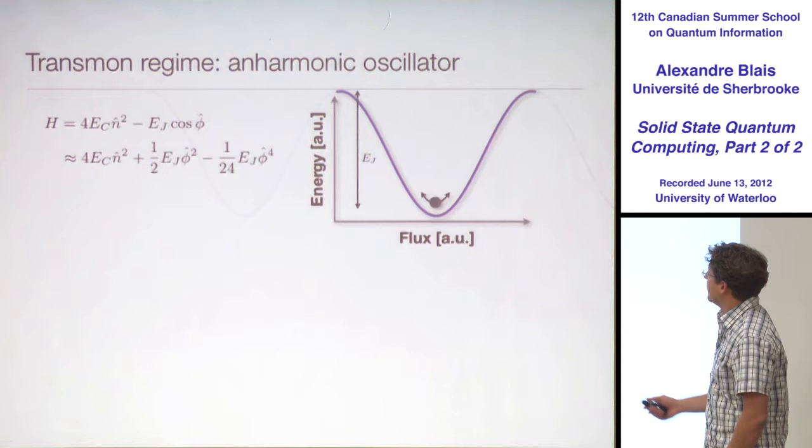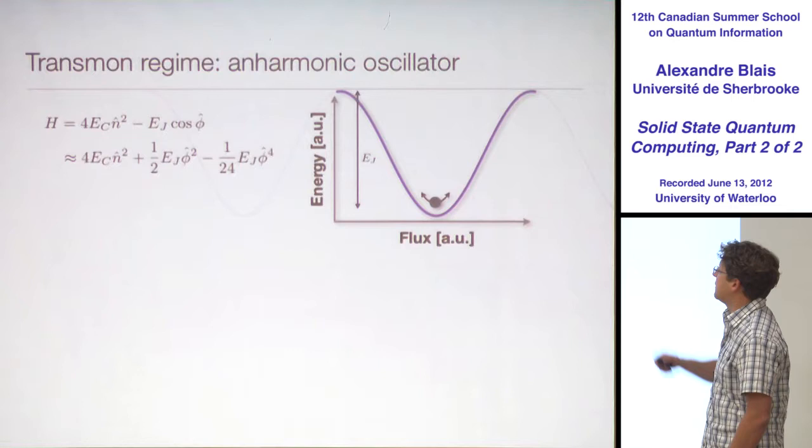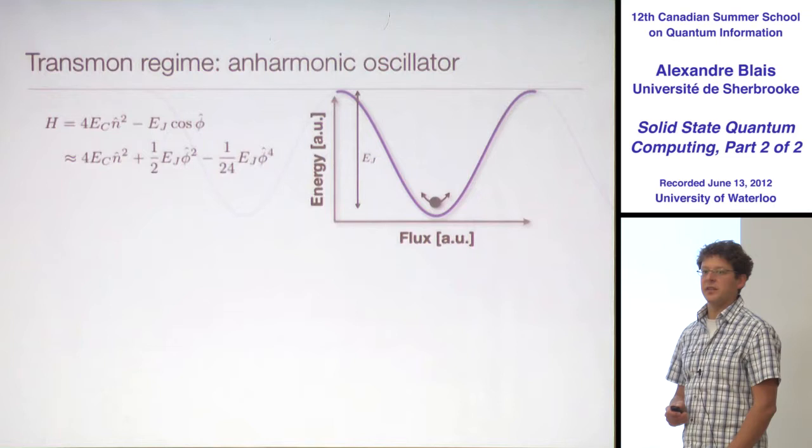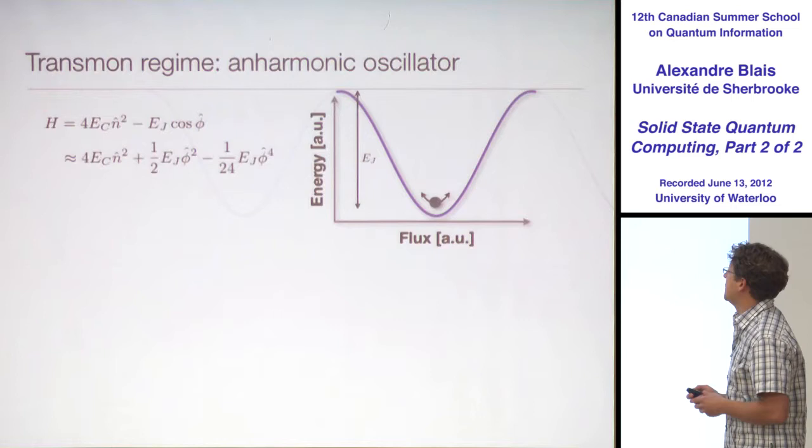This is the expansion. I have a phi-squared term and I have a phi-fourth term. If I were to drop this phi-fourth term, I would just be back to the harmonic oscillator. So the difference between a harmonic oscillator and a transmon is basically this phi-to-the-fourth term.